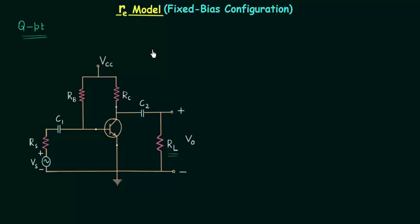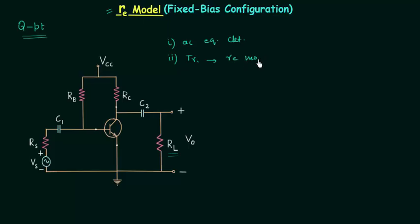In order to find out input and output impedances we need to do two things. The first thing is to find out the AC equivalent circuit, and the second thing is to replace the transistor symbol with its equivalent model. We are discussing the RE model, so we will replace the transistor with the RE model. Since we have the common emitter configuration, we will use the common emitter RE model which we discussed in the last two lectures. So let's move to the first step in which we will find out the AC equivalent circuit.